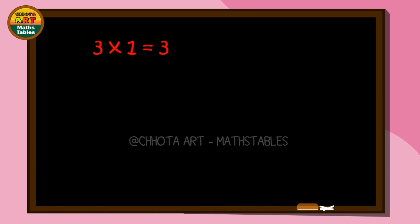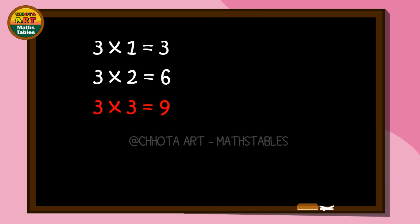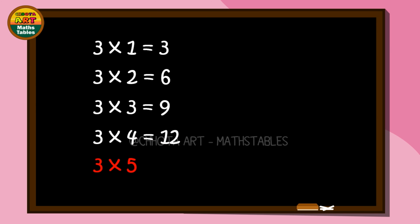Three ones are three. Three twos are six. 3 threes are 9. 3 fours are 12. 3 fives are 15.